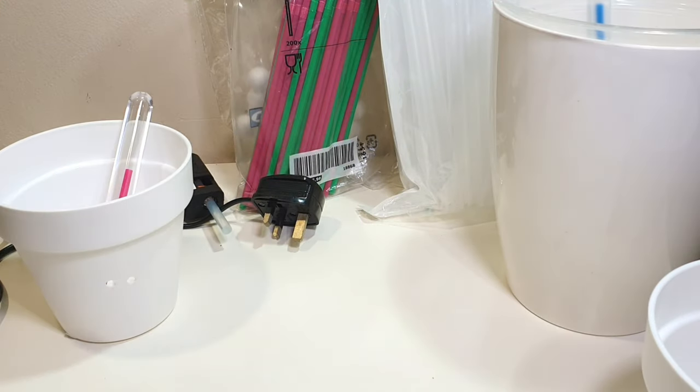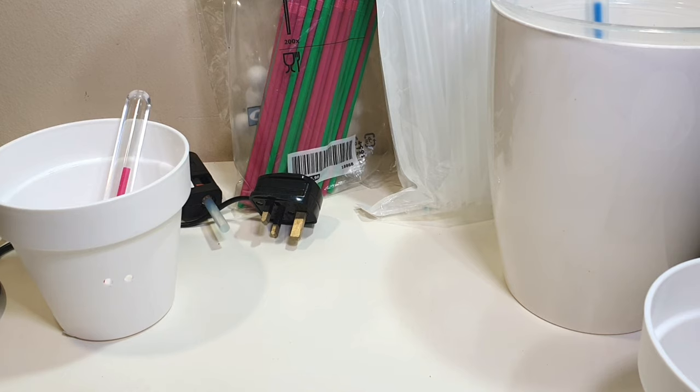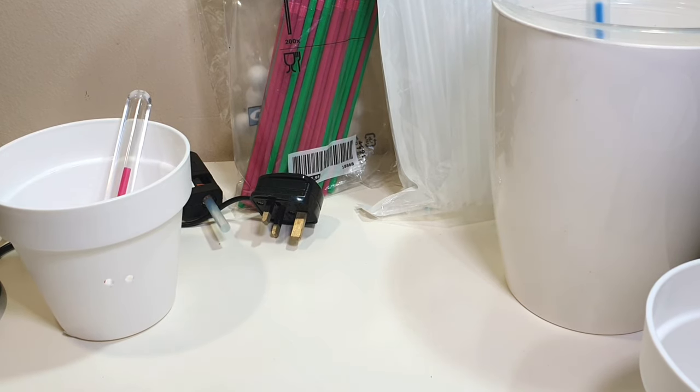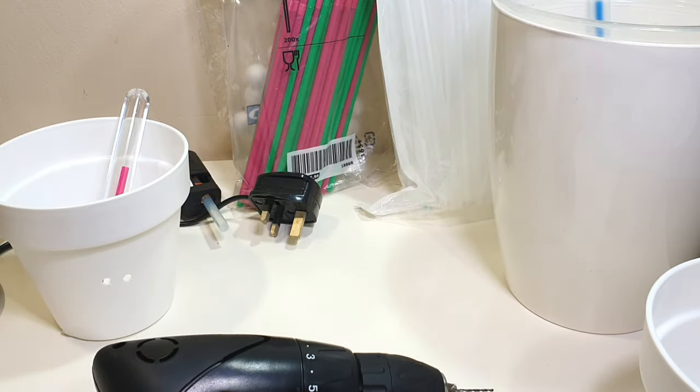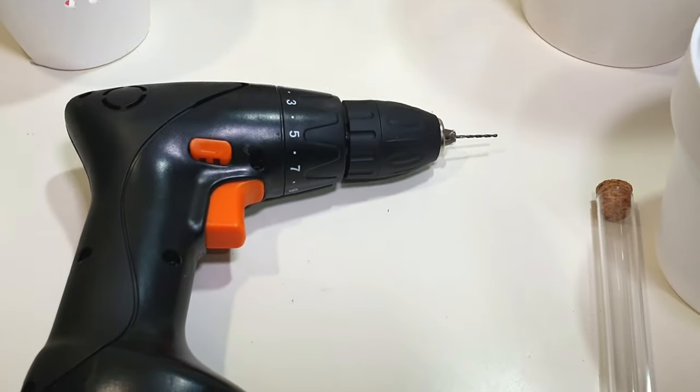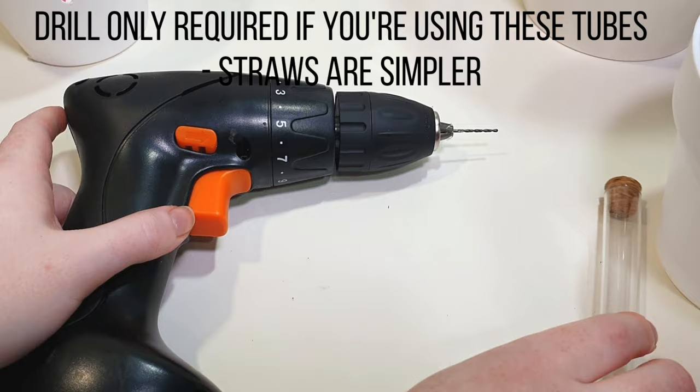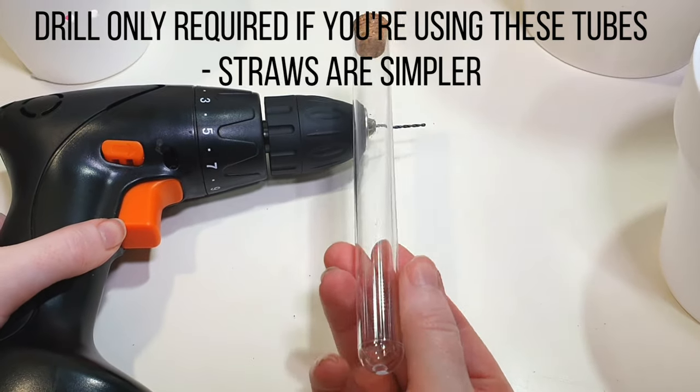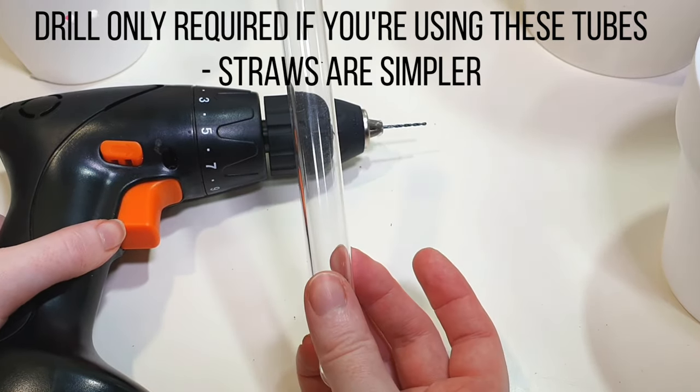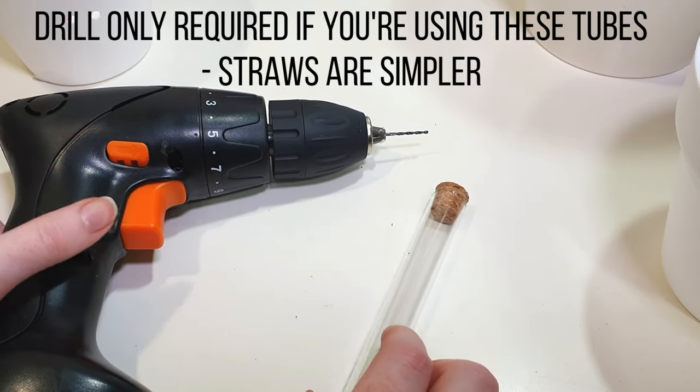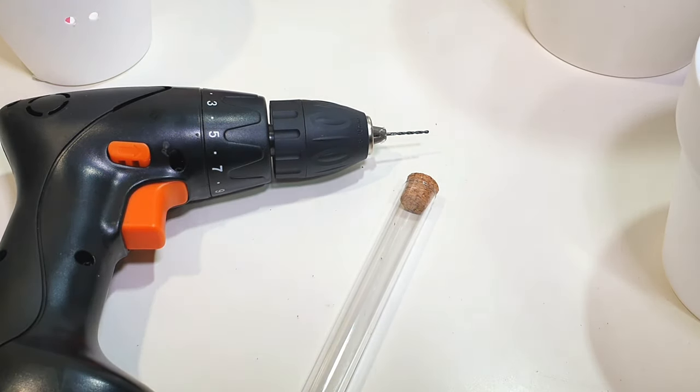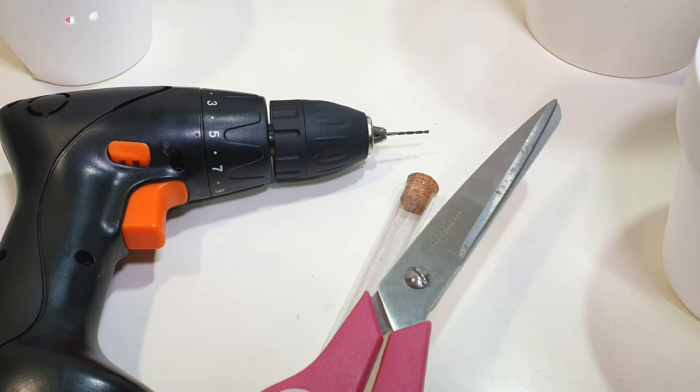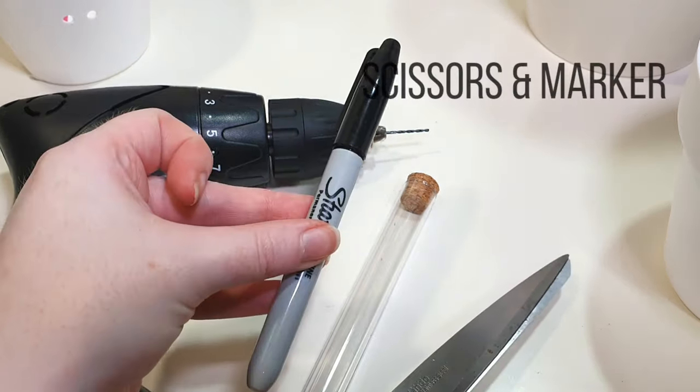I'll also be using a drill - you won't need this if you're going to be using the smoothie straw method. But if you want to use the test tube type, you will need to put a hole in the end and also down the bottom at the sides for water to access in.